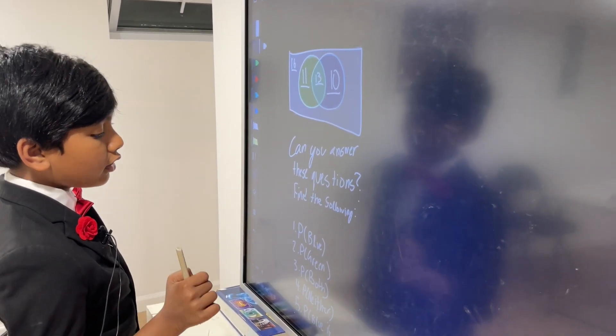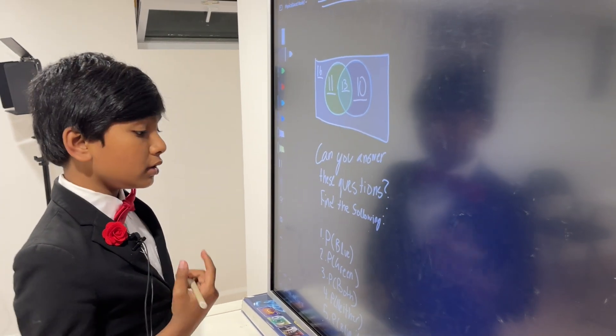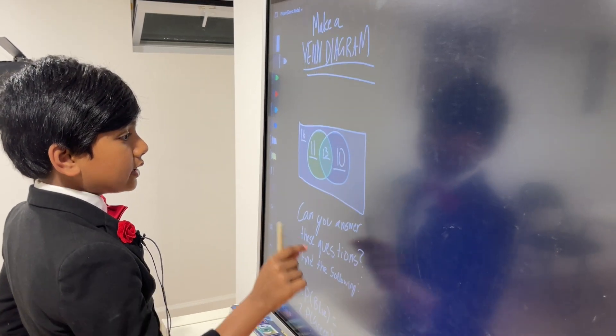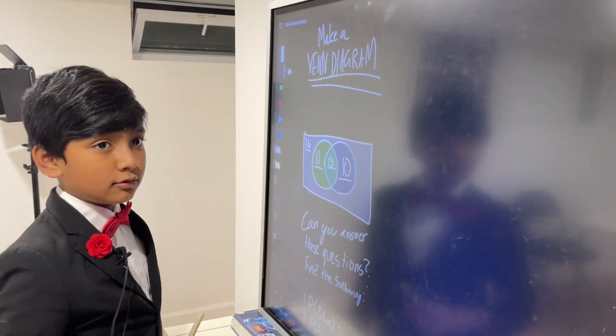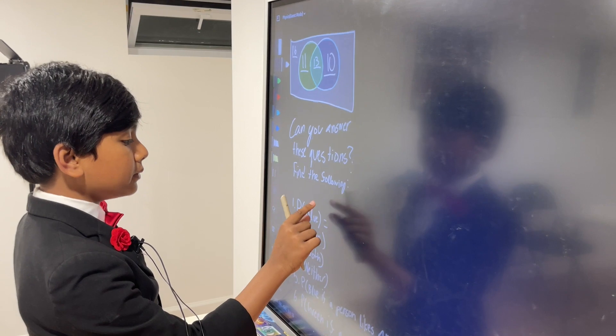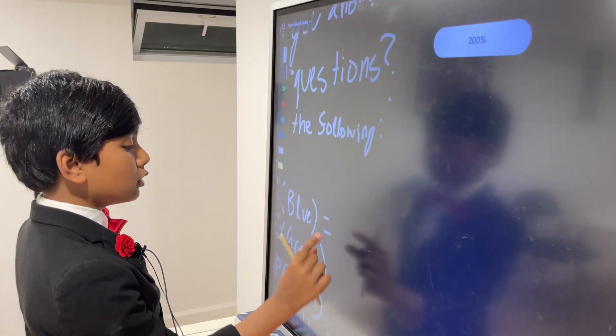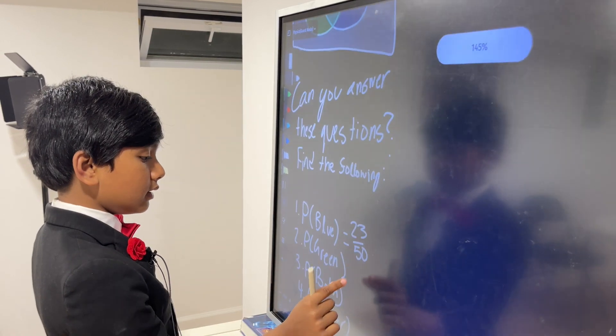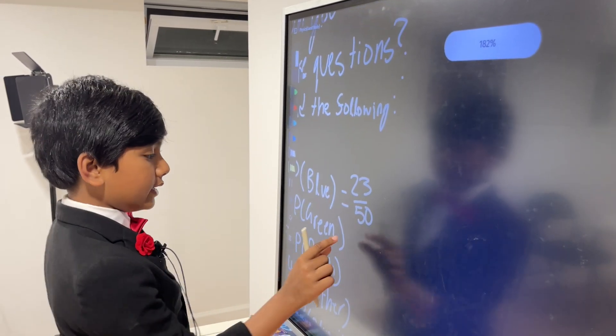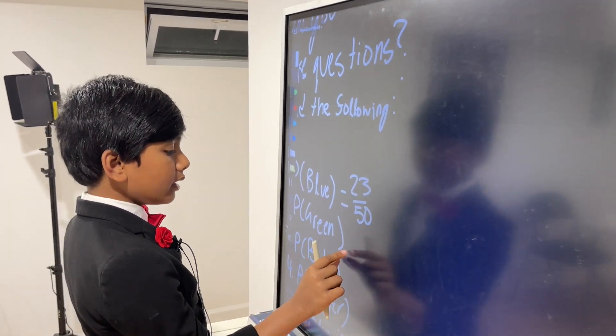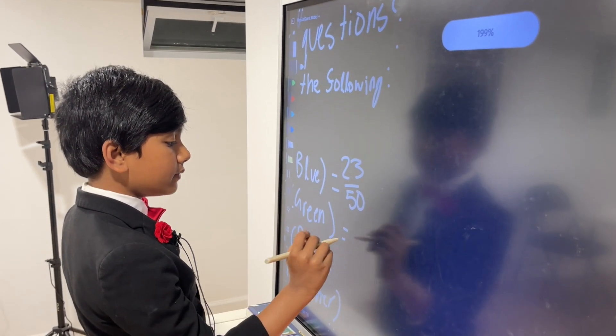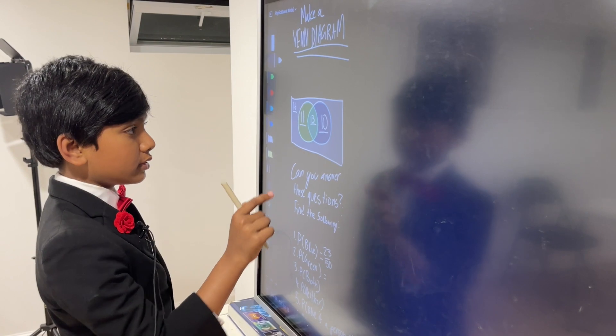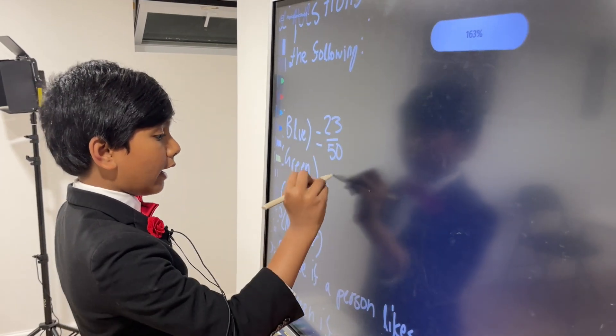First of all, what's the probability of somebody liking blue? Well, that would be because there are ten plus thirteen equals twenty-three people who like blue, and there were fifty people overall. Twenty-three out of fifty. I think they're going to get more complicated soon, though. The probability of green is, of course, eleven plus thirteen is twenty-four out of fifty.